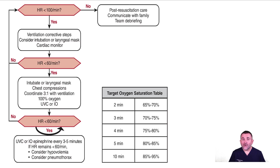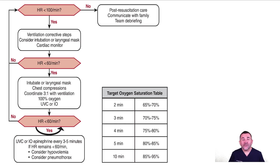When the heart rate is consistently greater than 100, gradually reduce the rate of ventilation. Observe for effective spontaneous respiration and gently stimulate the baby to breathe. Positive pressure ventilation may be discontinued when the baby has a heart rate continuously greater than 100 and sustained spontaneous breathing. Don't forget to communicate with the family and perform a team debriefing.